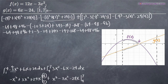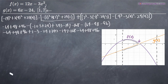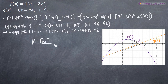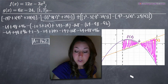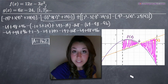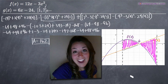Our final answer is area = 162. That is the total area between the curves on the range 1 to 7. Visually, that's everything between the two curves — from 1 to 4 where f(x) is on top, and from 4 to 7 where g(x) is on top. I really hope that video helped you guys, and I will see you in the next one!